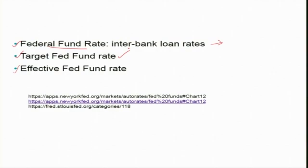Then there is the target Fed fund rate. For example, if it is set at 2% to 2.25%, that means the Federal Reserve System expects the Fed fund rate to fall somewhere between those two figures. When the FOMC announces the Fed fund rate, they are not announcing the actual Fed fund rate — because they cannot determine it directly. The actual rate is determined by the demand for and supply of reserves by the banking system.